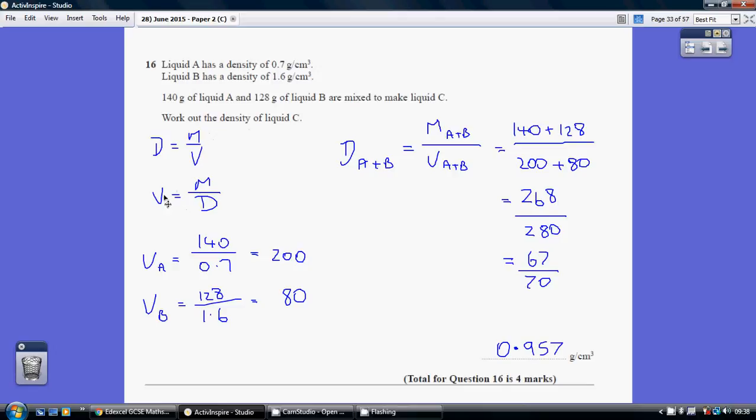And rearranging, volume is mass over density. So what volumes have we got here? The volume of A is the mass of 140 over the density of 0.7. So we have a volume of